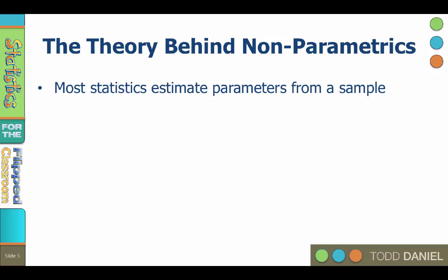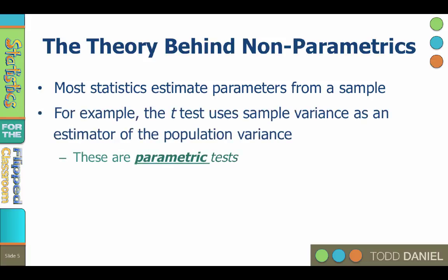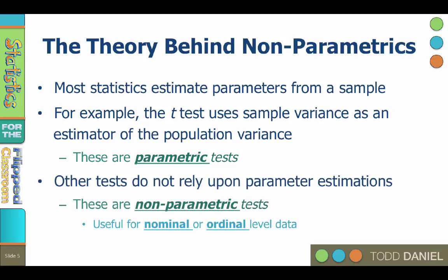Most of the statistics we have used so far estimate population parameters from a distribution of scores in a sample. For example, the t-test uses sample variance as an estimator of population variance. Tests like this are called parametric tests, and they work because the central limit theorem shows us that the distribution of sample means will form an approximately normal distribution. But there is a class of tests that do not rely upon parameter estimations or distribution assumptions, and these are called non-parametric statistics.